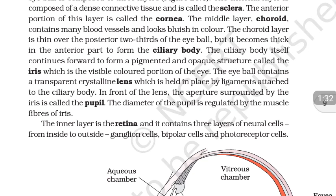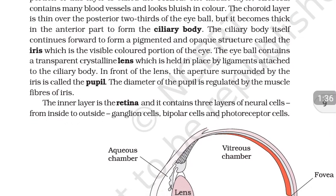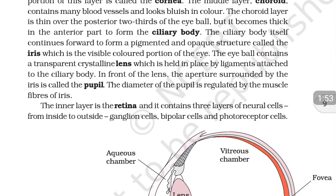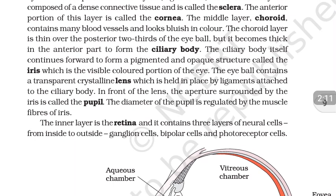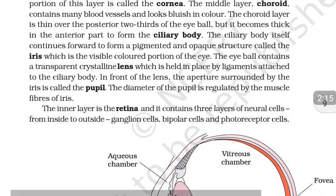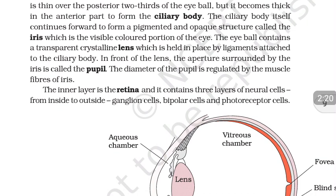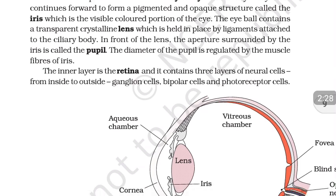The ciliary body continues forward to form a pigmented and opaque structure called the iris, which is the visible colored portion of the eye — typically brown, blue, or another color. The eyeball contains a transparent crystalline lens held in place by ligaments attached to the ciliary body. The aperture surrounded by the iris is called the pupil, and its diameter is regulated by the muscle fibers of the iris.